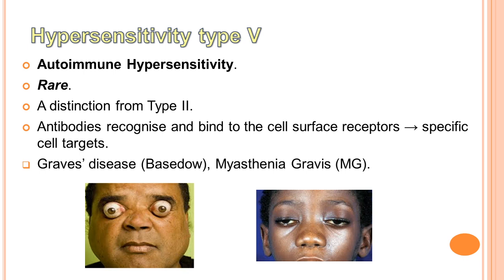The last type of hypersensitivity is type 5, also called autoimmune hypersensitivity. This one is rare and more frequently classified as type 2, although sometimes used as a distinction from type 2. Instead of binding to cell surfaces, the antibodies recognize and bind to cell surface receptors, then stimulate specific cell targets. For example, in Graves' disease (autoimmune hyperthyroidism) or myasthenia gravis (MG). Loại 5 rất hiếm và thường được phân vào loại 2. Kháng thể liên kết các thụ thể trên bề mặt tế bào, kích thích mục tiêu cụ thể. Ví dụ bệnh Basedow (cường giáp tự miễn) và bệnh nhược cơ myasthenia gravis.